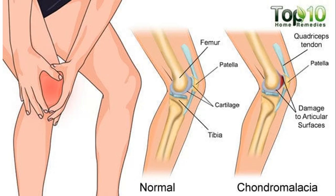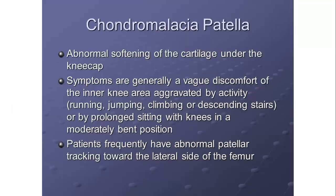Here you see the normal patella and here is the abnormal one where the patella is striking against the condyles of the femur. Because of repeated trauma there is damage to the articular surface and that causes pain, so the person is unable to run — that is called runner's knee. It is basically related to the posterior surface of the patella, an abnormal softening under the kneecap. Symptoms are discomfort in the inner knee aggravated by running, jumping, climbing or descending stairs. Patients frequently have abnormal patella tracking towards the lateral side of the femur.